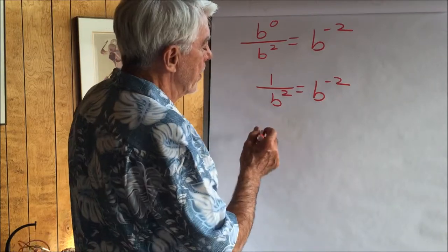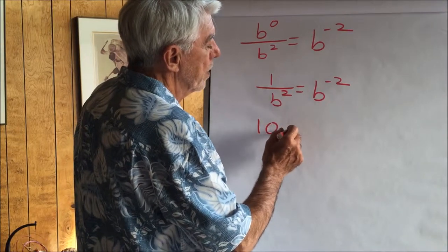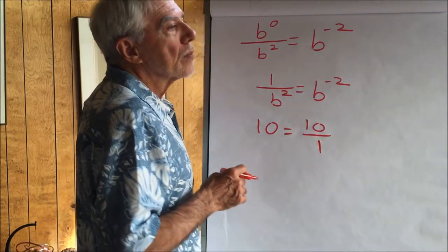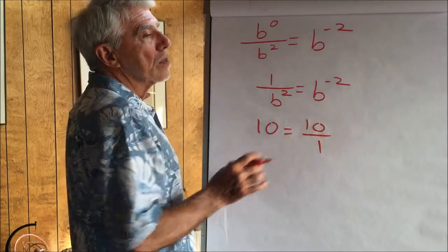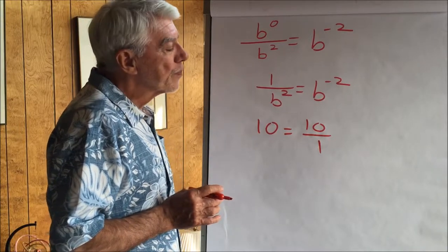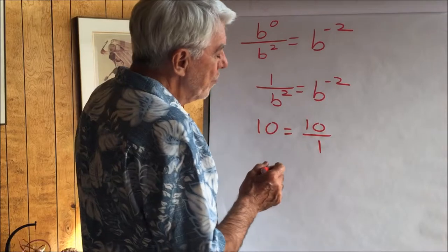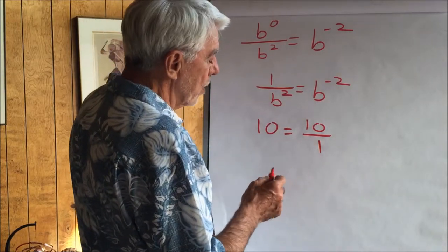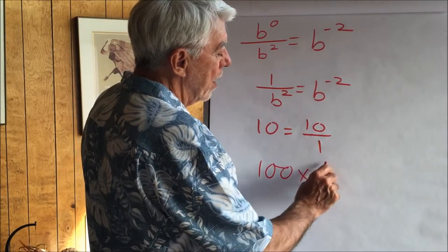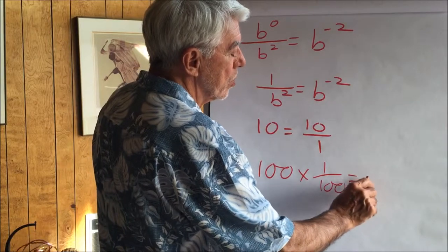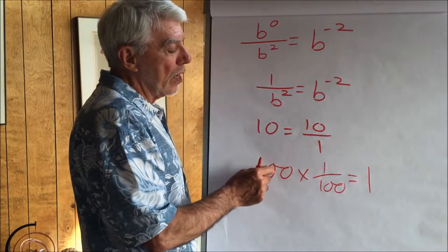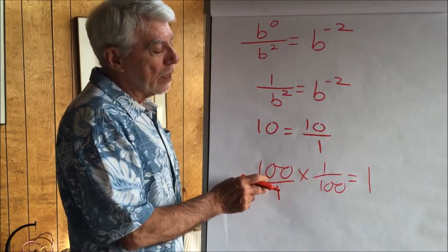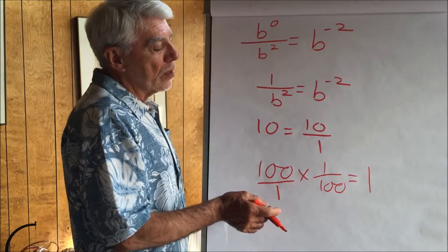Now let's get further insight into this. All of our integers can actually be written as fractions. For example, 10 can be written as 10 divided by one — we just don't bother to write this. Every integer can be written as a fraction divided by one. If a number is multiplied by another number to get one, that other number is called a reciprocal. For example, 100 times 1 over 100 equals 1 — so 1/100 is the reciprocal of 100.